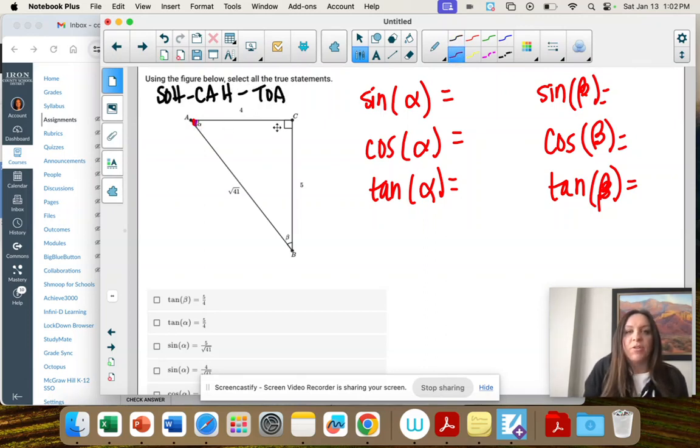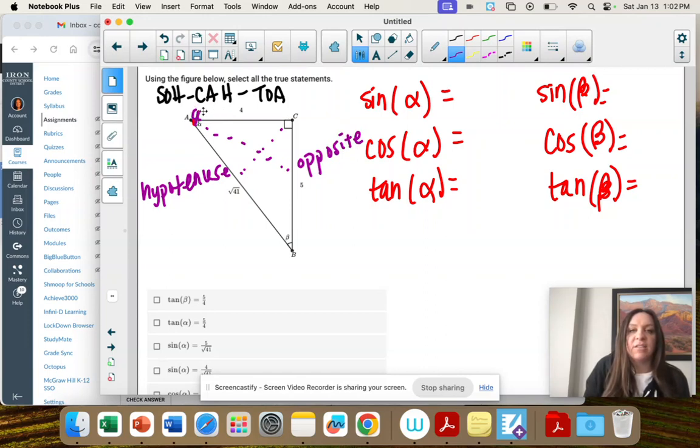Across from the right angle, that's always going to be our hypotenuse. Across from our reference angle is going to be the opposite. And then the remaining side next to that is going to be the adjacent.